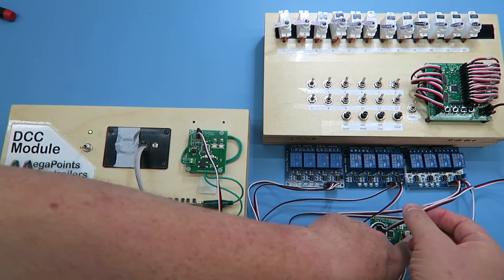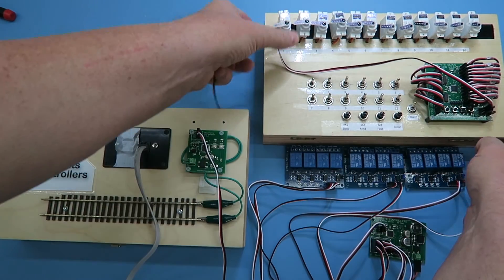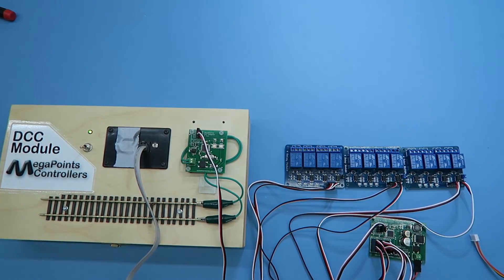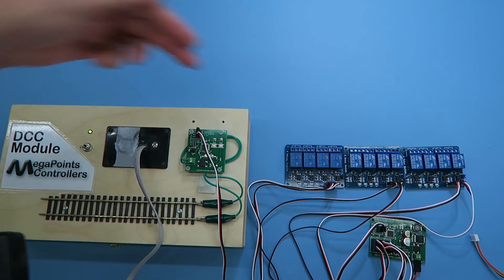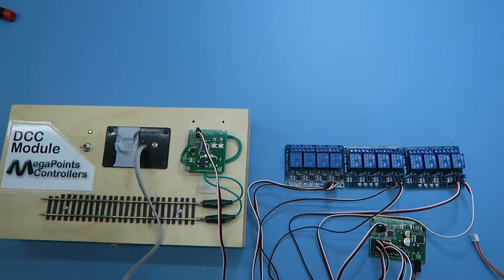But of course if I remove the servo controller completely now it's simply a relay accessory so you can use it to switch whatever you want even as part of a route where you may want to control track power. It's pretty flexible.